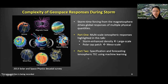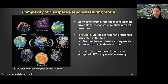The talk today will be separated into two sections. In the first part, I will talk about observation and numerical modeling of storm-enhanced density, which is a larger-scale structure, and polar cap patches, which are a mesoscale structure. In the second part, I will talk about the specification and forecasting of ionosphere TEC using machine learning techniques.